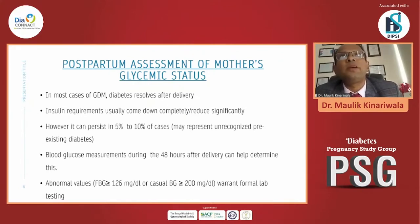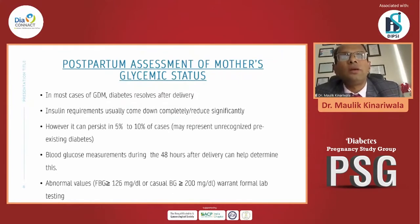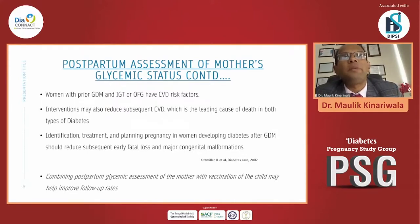In most cases, GDM diabetes usually resolves after delivery. Insulin requirement usually comes down completely, or reduces significantly in patients who were on higher doses. However, it can persist in 5 to 10 percent of cases, and sometimes this represents unrecognized pre-existing diabetes. Blood glucose monitoring during the 40 days after delivery helps determine future outcome. When fasting sugar is more than 120 or random sugar is more than 200 mg/dL, we must recognize the patient is at future risk of diabetes. When a woman has prior GDM, IGT, or IFG, there are underlying risk factors, and proper intervention and treatment — including planned pregnancy — can reduce subsequent early fetal loss and major congenital malformations.